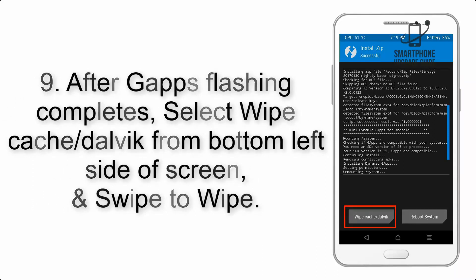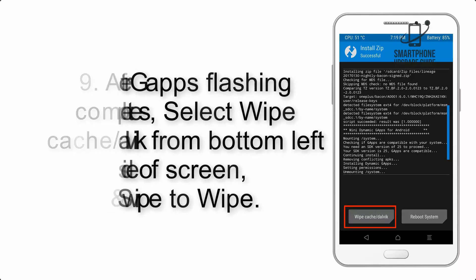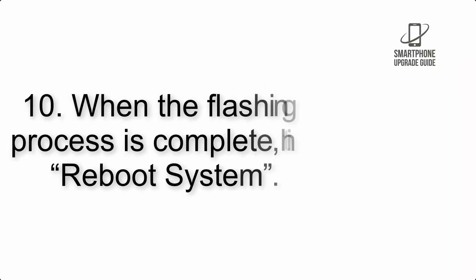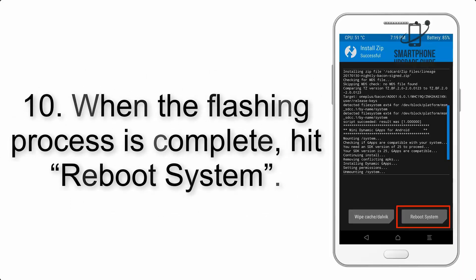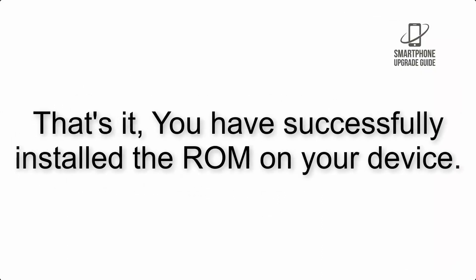Step 9: after GApps flashing completes, select Wipe Cache and Dalvik from the bottom left side of the screen and swipe to wipe. Step 10: when the flashing process is complete, hit Reboot System. That's it — you have successfully installed the ROM on your device.